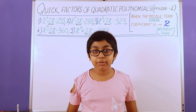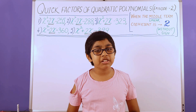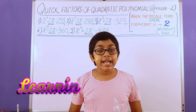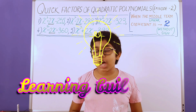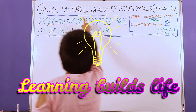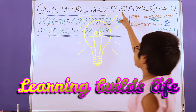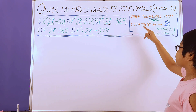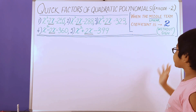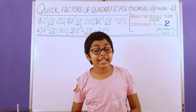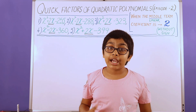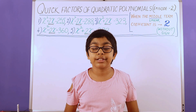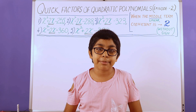Hello, I'm Sienna Bells, and welcome to my channel, Learning Bells Live. Today we're going to talk about how to find quick factors of quadratic polynomials when the middle or linear term coefficient is 2. It's a new case, and we have a special trick for you, but it's different from the trick you learned in the previous episode.